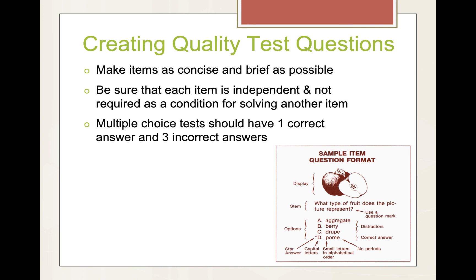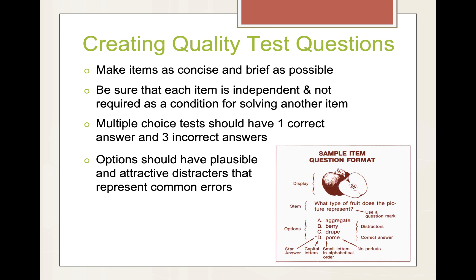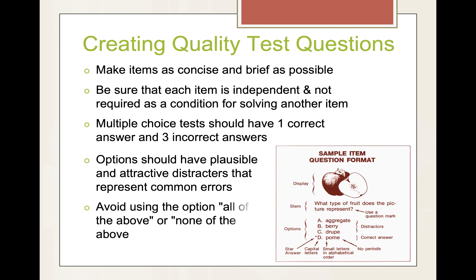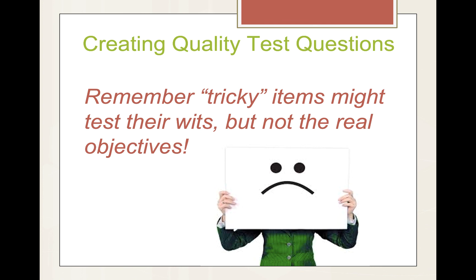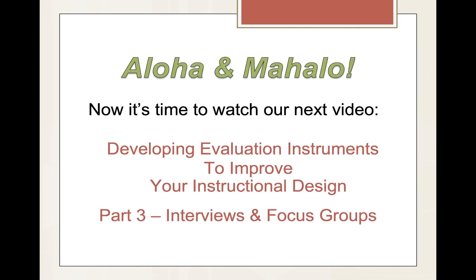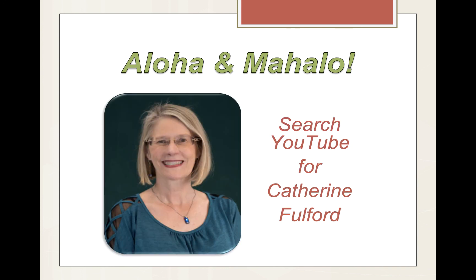Multiple choice tests should have one correct answer and three incorrect answers. Options should have plausible and attractive distractors that represent common errors. Avoid using the option of 'all of the above' or 'none of the above.' If you do decide to use this, make sure that some cases use it as the correct answer and some do not. Remember, tricky items might test their wits, but not the real objectives. Aloha and mahalo. Now it's time to watch our next video: Developing Evaluation Instruments to Improve Your Instructional Design, Part 3: Interviews and Focus Groups. You can also search YouTube for Katherine Fulford for more videos on instructional design and evaluation.